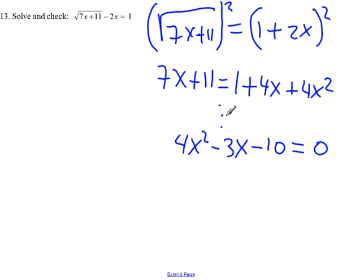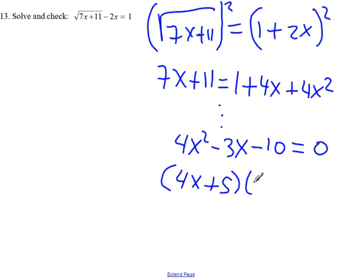That gives us 4x squared minus 3x minus 10 equals 0. Now we have to solve this quadratic equation. We can try factoring or the quadratic formula. Factoring works — I tried it. I got 4x plus 5 times x minus 2 equals 0.